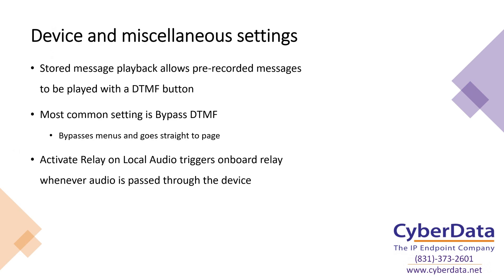Another commonly required feature is Activate Relay on Local Audio. This activates the physical relay whenever any audio is passed through the paging adapter — whether it's in a SIP call receiving audio to transmit via analog wires, a multicast stream, or even line-in audio from the RCA line-in port. This gives you a lot of capability to manually trigger different amplifiers.